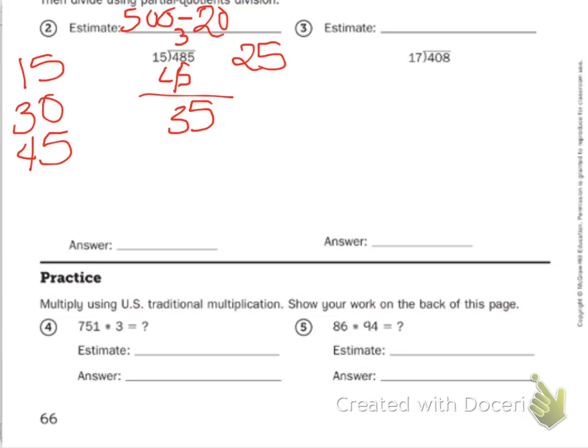So then I bring down the 5. So 35 divided by 15. So 2, 2 times 15 is 30. With 5 left over, 15 can't go into 5. So we have 32, remainder 5.